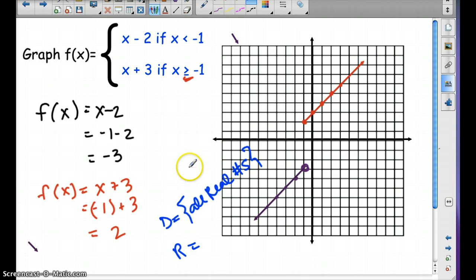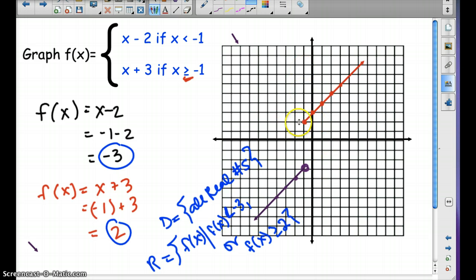So our range, then, if we state f of x, if we notice, we have this gap here. So with our gap, it's in between these two numbers. So f of x has to be less than negative 3 or f of x could be greater than or equal to 2. So it's greater than or equal to 2 because it's above positive 2, but it's also less than negative 3. So that's how we'd write our domain and range.